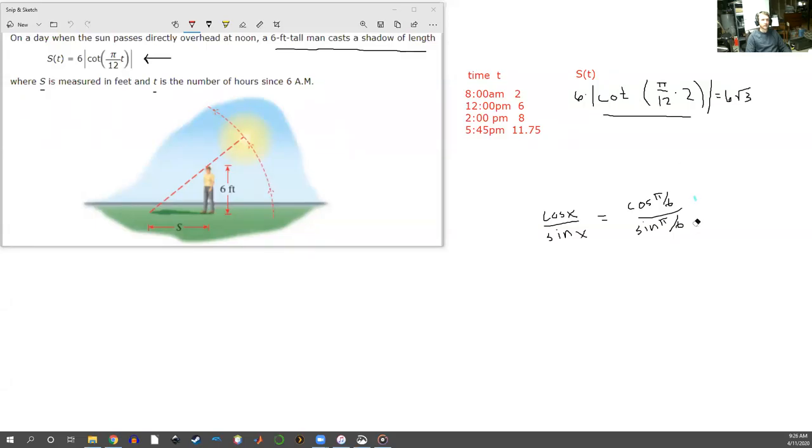For the next part, all we're going to do is replace this 2 with 6, and we're going to repeat the whole process just to calculate out the length of the shadow. So we're going to get 6 times the absolute value of the cotangent of π over 12 times 6, close that absolute value off. So this is the cotangent of π over 2. That's how the 6 and 12 cancel.